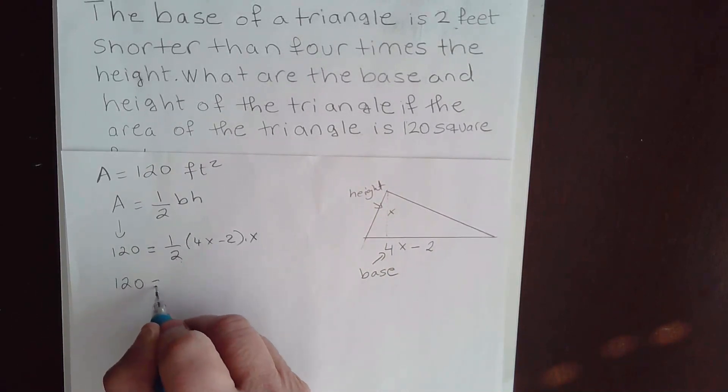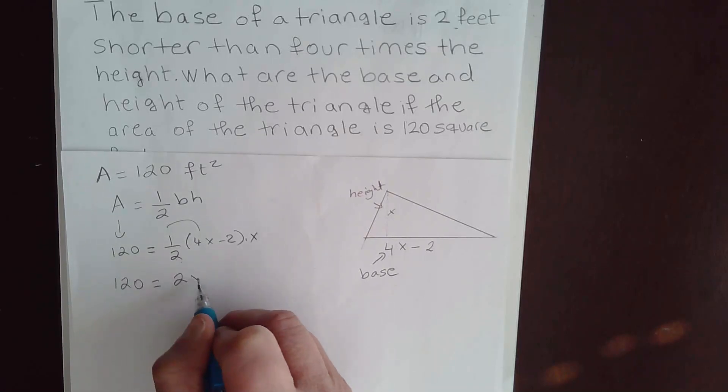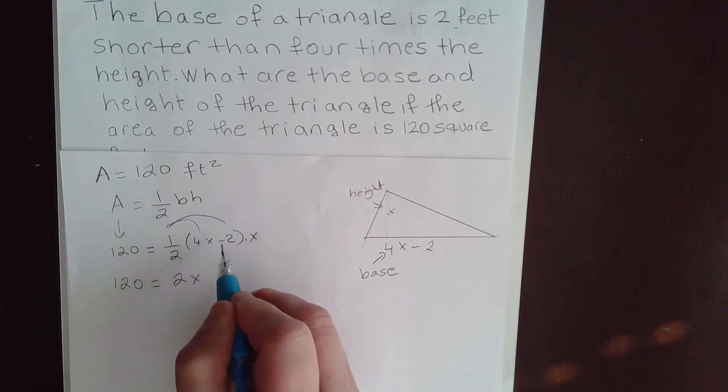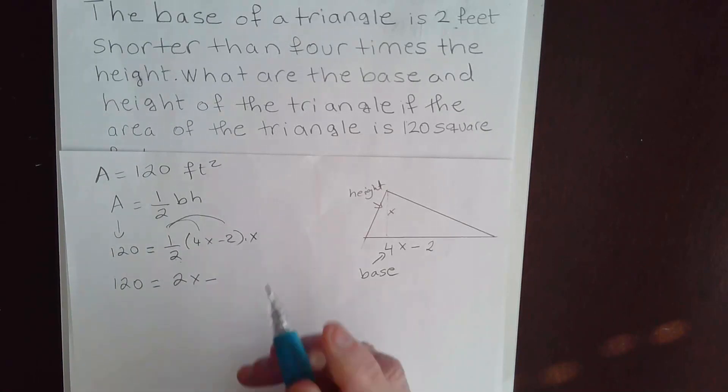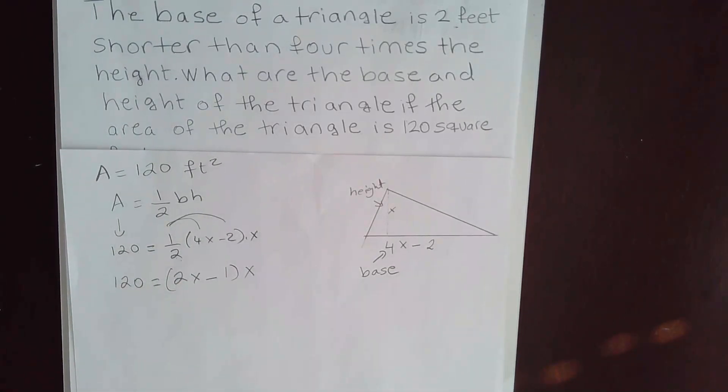You have 120 equal to. Distribute this. What do you have? 4 divided by 2 is 2X minus 2 divided by 2 is 1 times X. So this way we got rid of the fraction.